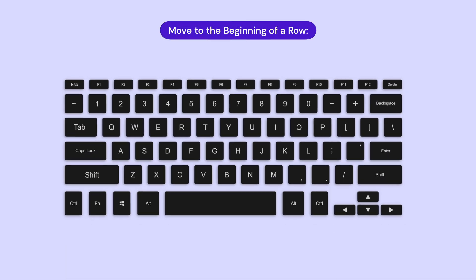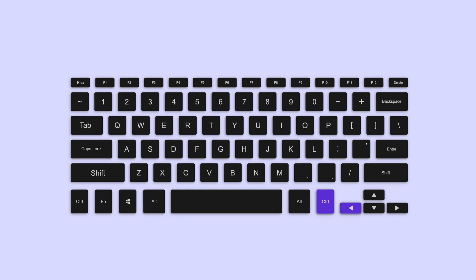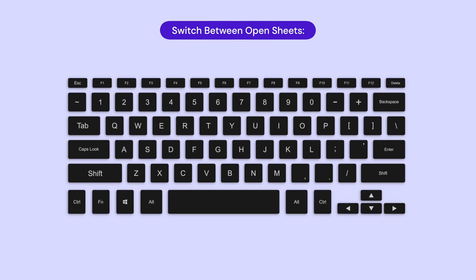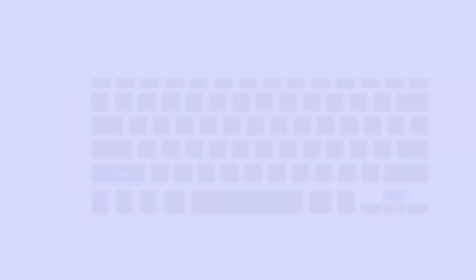One of the many perks of using Google Sheets is an array of shortcuts at your fingertips, helping you streamline your work and save precious time. Here are some keyboard shortcuts for navigation. To move to the beginning of a row, press Ctrl + Left Arrow. To move to the end of a row, press Ctrl + Right Arrow. To switch between open sheets, hold down Ctrl + Shift + Page Up or Page Down. Try these out and you'll be flying across your spreadsheets like a pro.